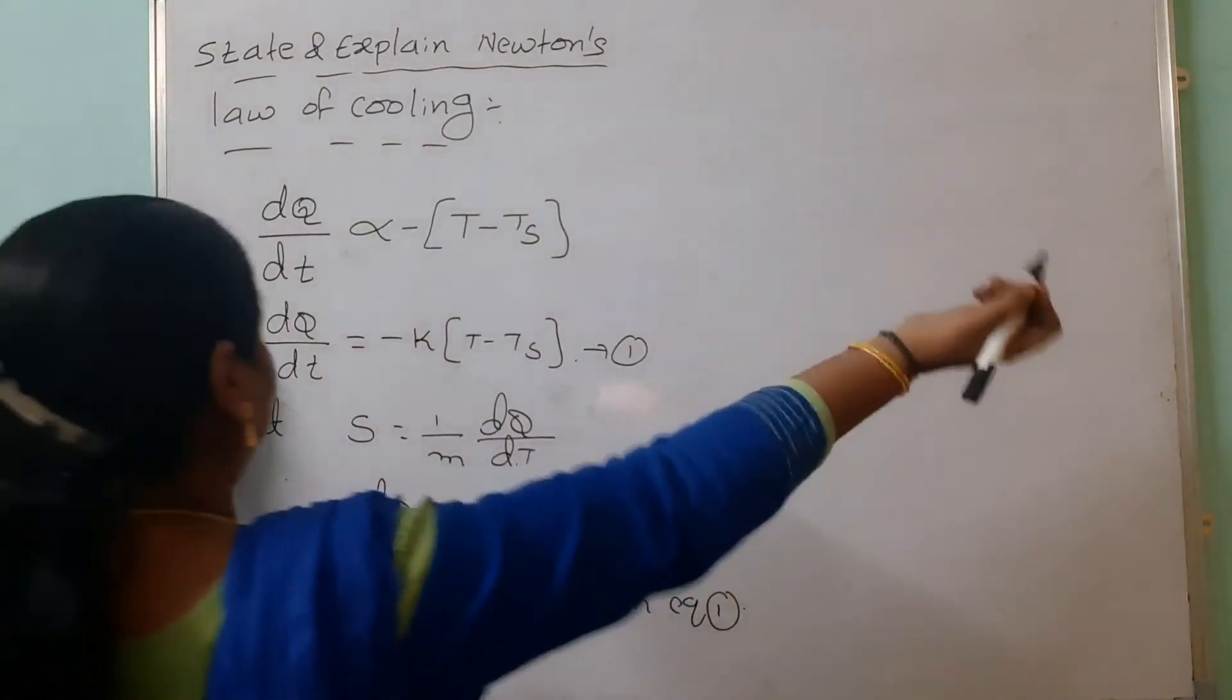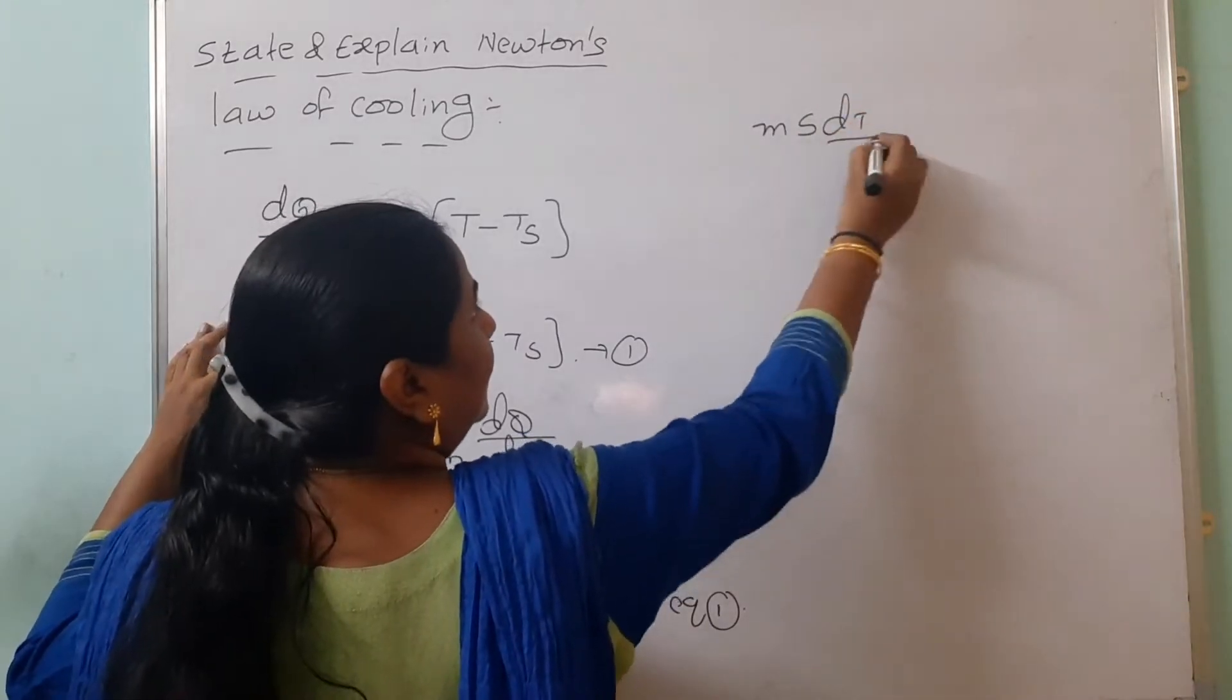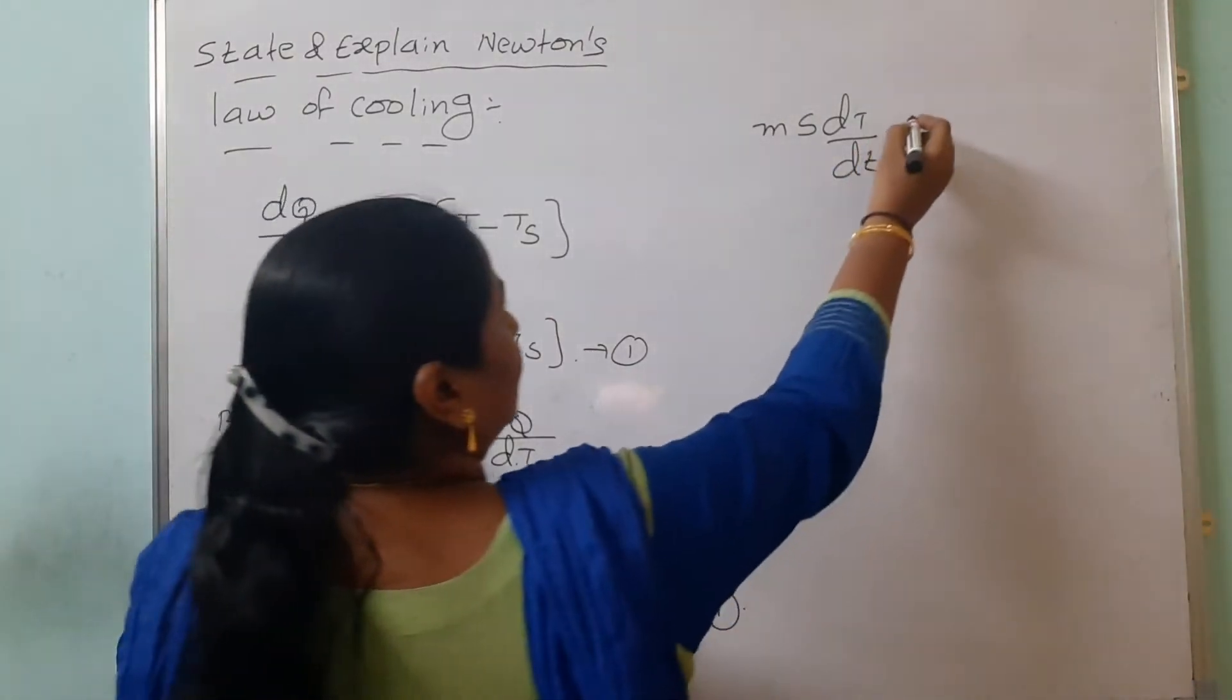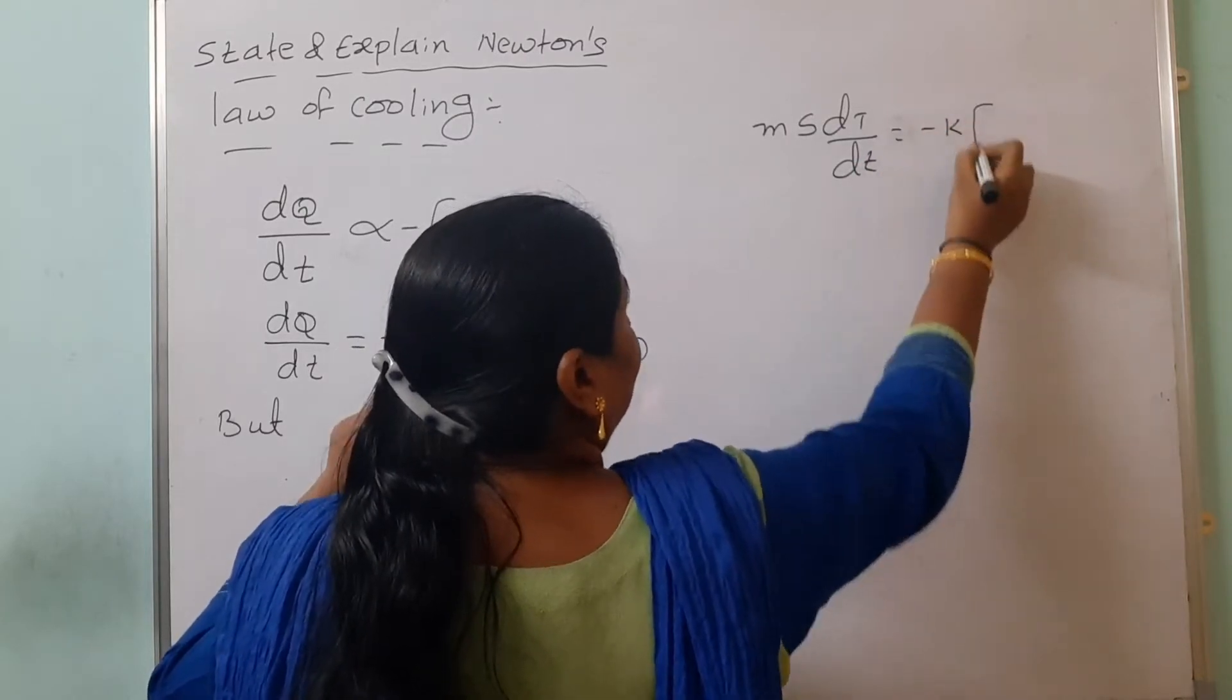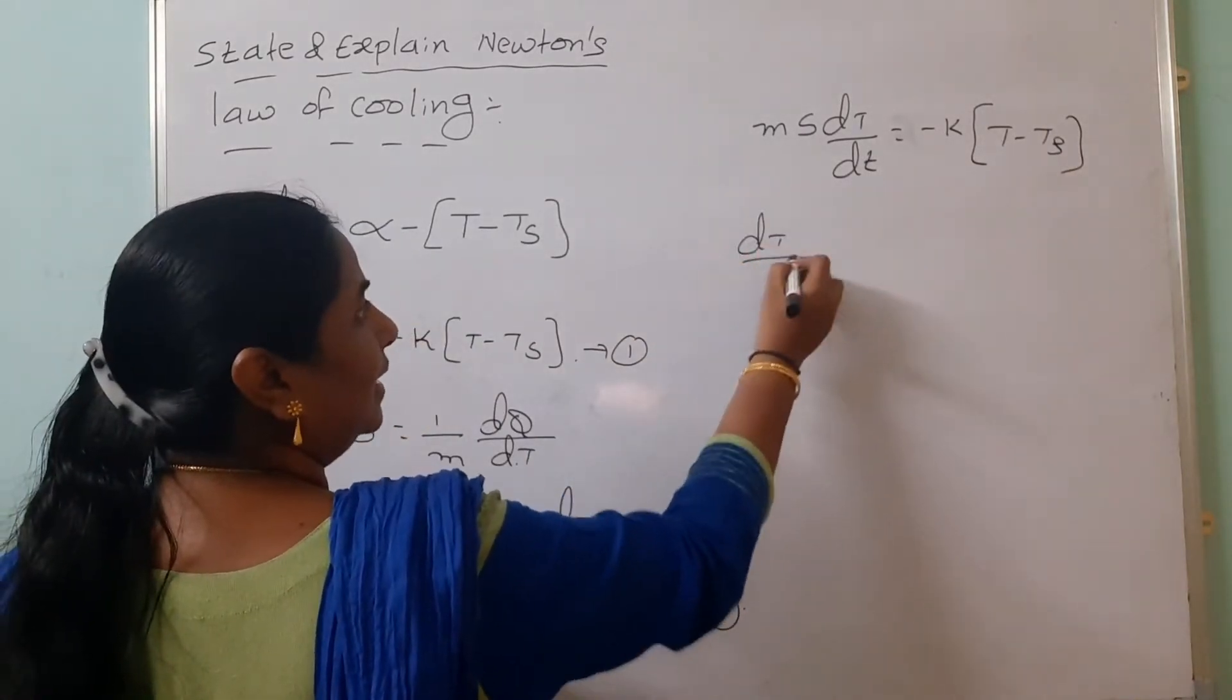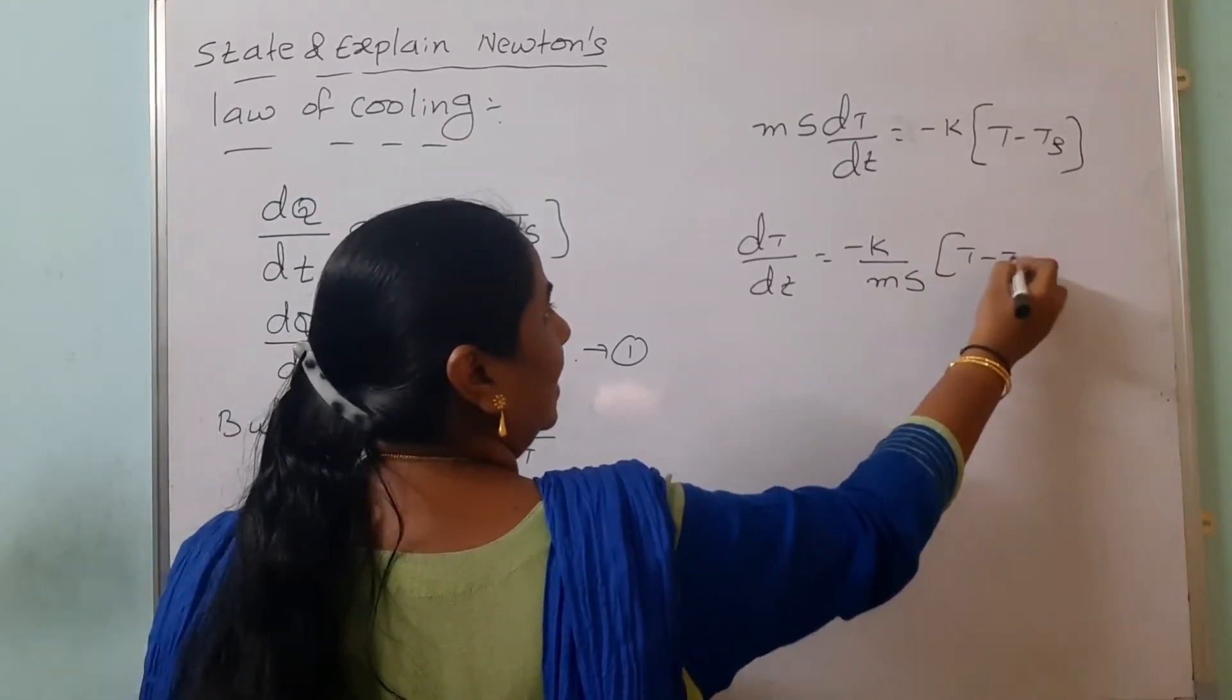Then what you are getting? Instead of DQ we are writing M S DT by DT. Capital T belongs to temperature, small t belongs to time. Is directly proportional to minus K into T minus TS.